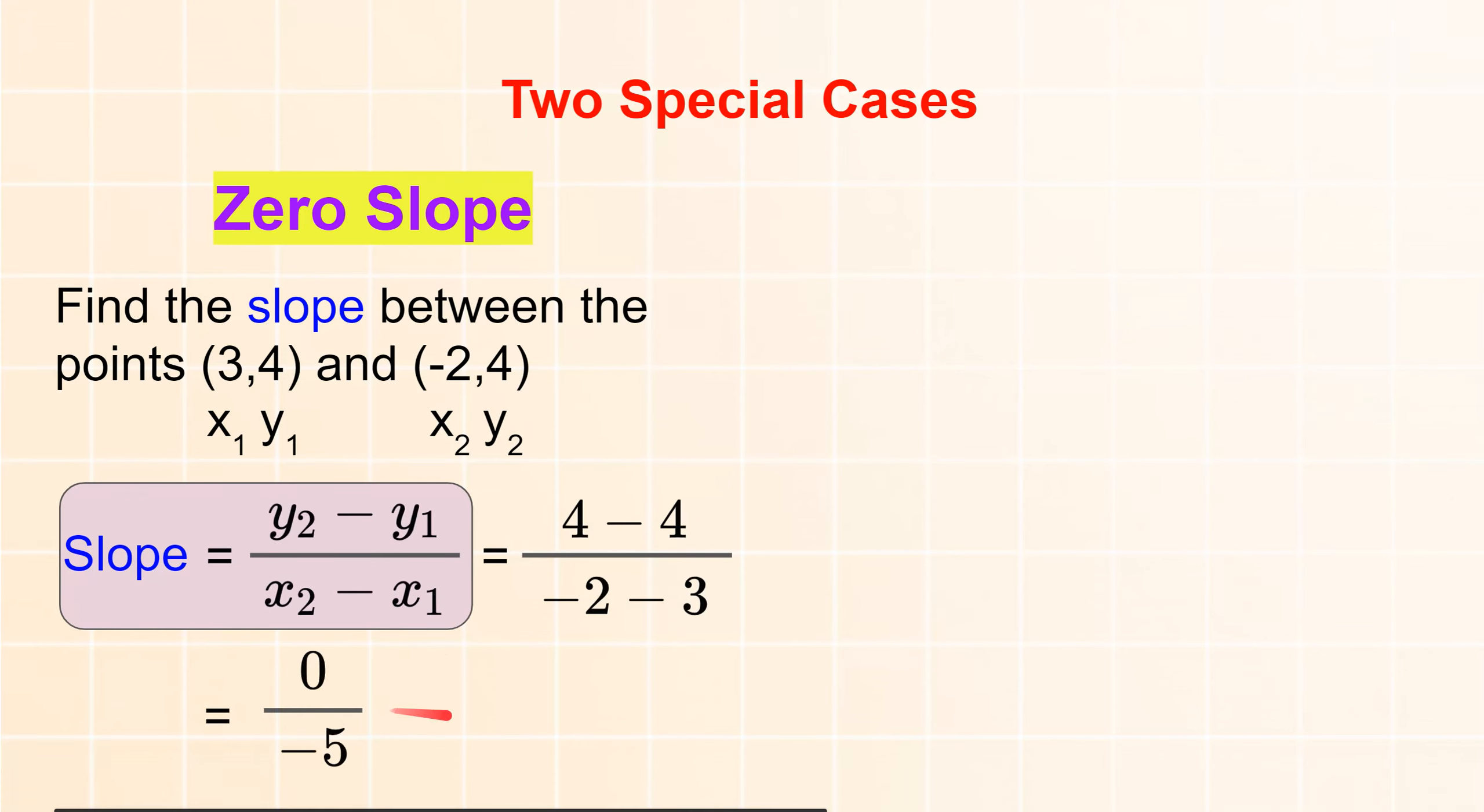And 0 divided by any number, in this case negative 5, is 0. So this is always called the 0 slope, when the y's are equal.